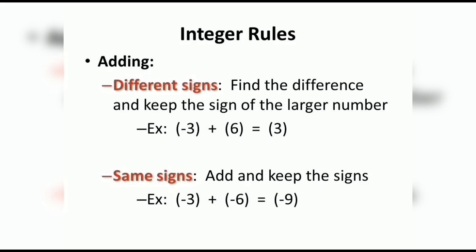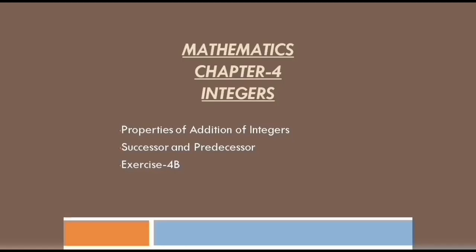When the signs are same, we simply add and keep the sign. For example, minus three and minus six are two integers — we will add them and keep the common sign, which is minus. So our answer will be minus nine. After discussing this, we will discuss properties of addition of integers, successor and predecessor, and we will start our exercise 4B. So let's start.